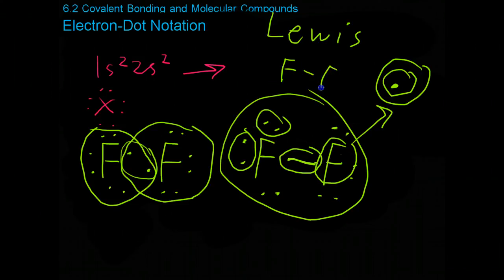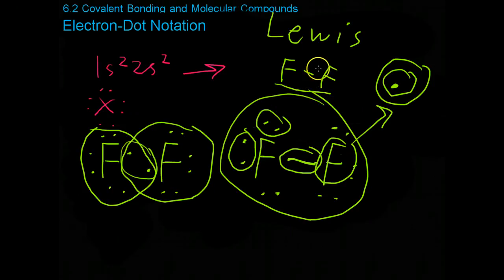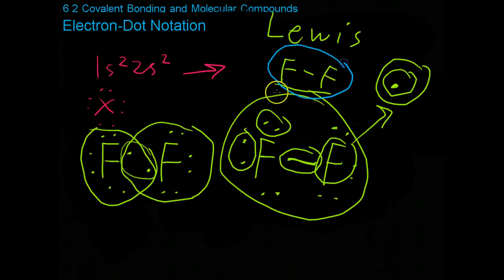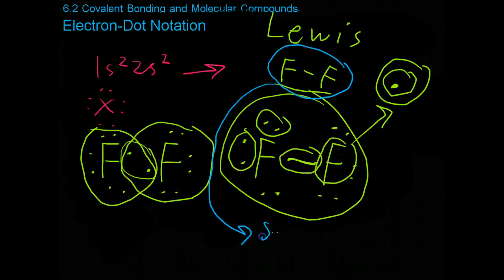For example, for the third example of how this fluorine bond could be represented, you could just do F dash F, and that would represent the diatomic fluorine, and all chemists would know that there's six unshared electrons on each fluorine. Now, this is not a Lewis structure here. The Lewis structure shows all the electrons. This is what is known as a structural formula.